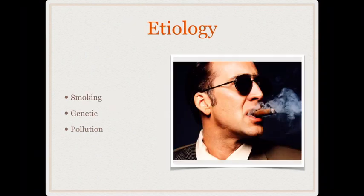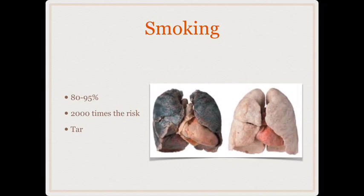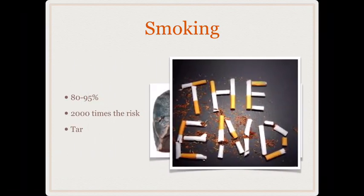Coming to the etiology, smoking is the main causative factor for developing lung cancers. There are also certain genetic predispositions and pollution is another etiological factor. Roughly about 80 to 95% of patients with lung cancers are smokers, and smoking increases the risk by more than 2000 times. The component of cigarette smoke thought to be carcinogenic is the tar — this is a common MCQ.